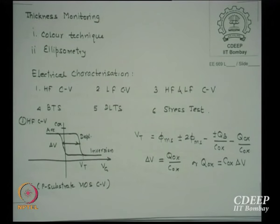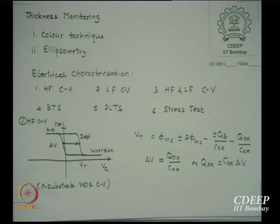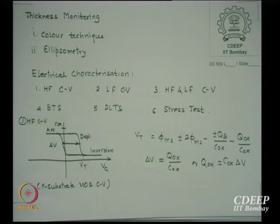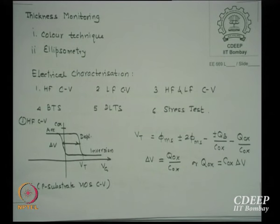We also do BTS — Bias Temperature Stability CV measurements — and DLTS — Deep Level Transient Spectroscopy. We may do stress tests: TDDB (Time Dependent Dielectric Breakdown), applying constant voltage for a long time at a given temperature. After some time the dielectric current starts shooting up — that is TDDB. We may also do secondary current measurements with isochronal timing (same time, varying temperature, or same temperature, varying time), and noise measurements including post-office noise and flicker noise.